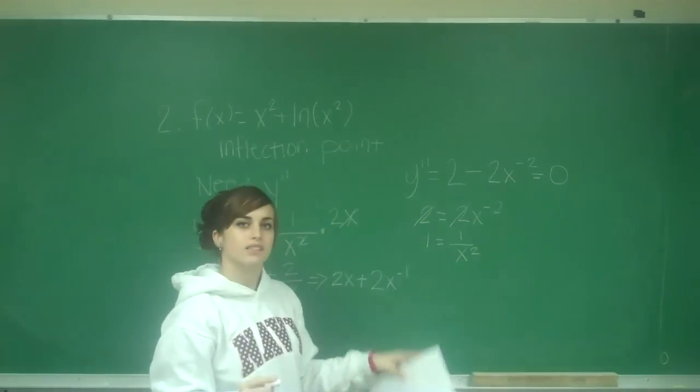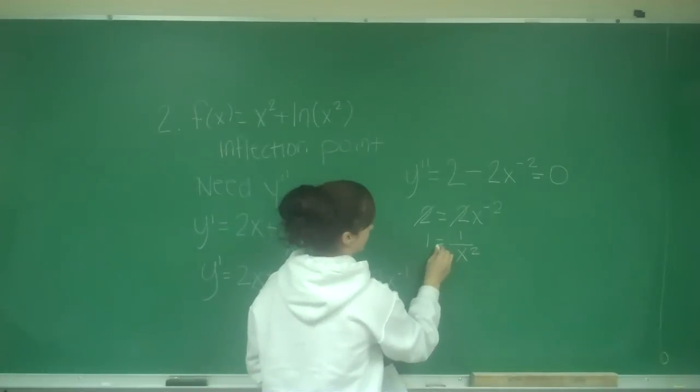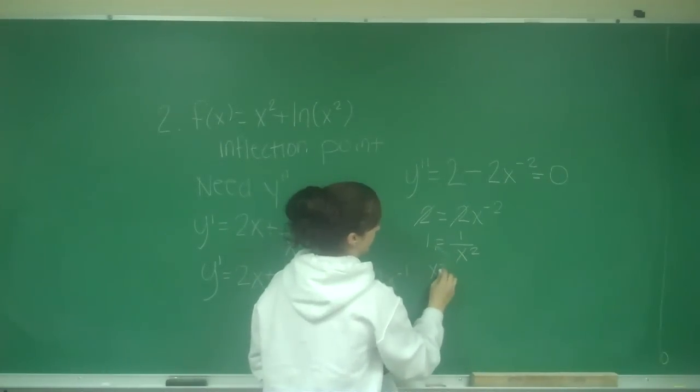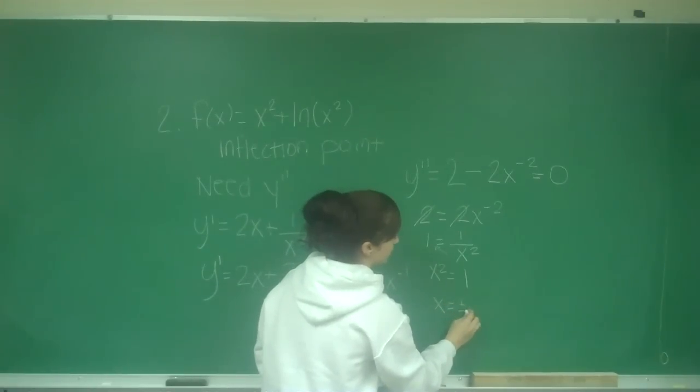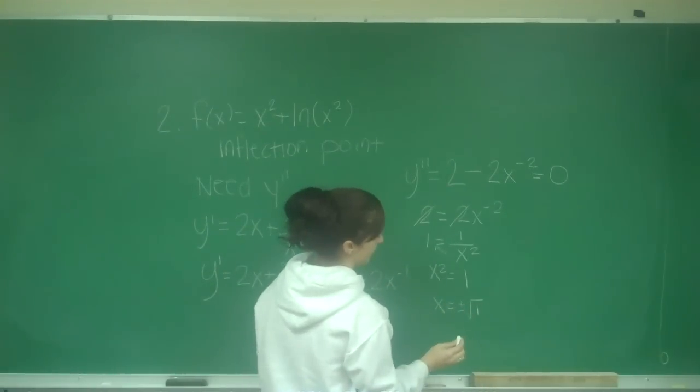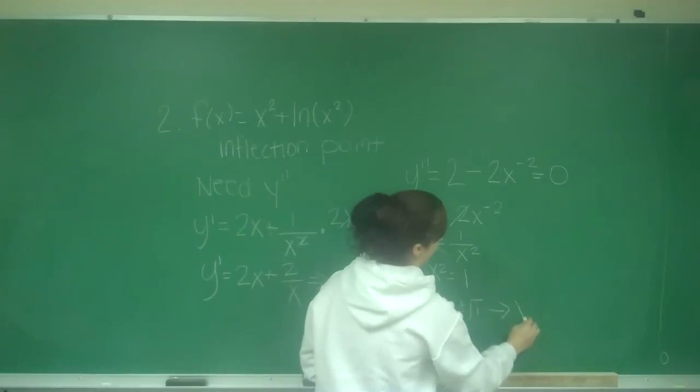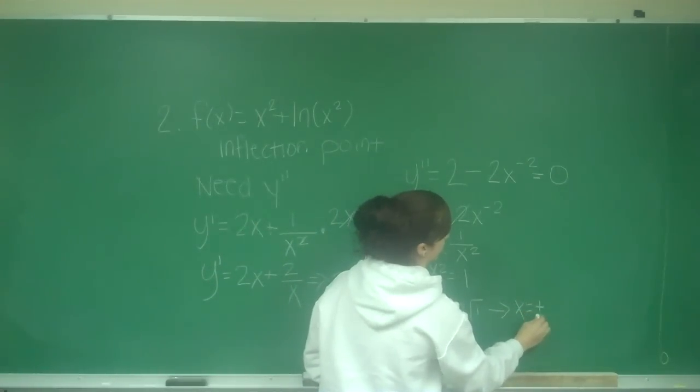I can multiply the x squared up, so I have x squared equals 1, and then x equals plus and minus the square root of 1. So that means x equals plus or minus 1.